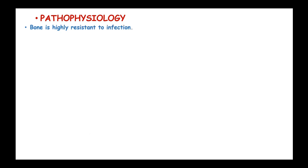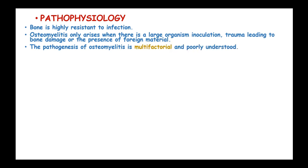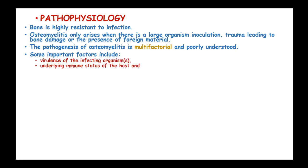Normally bone is highly resistant to infection, and osteomyelitis only arises when there is a large organism inoculation, trauma leading to bone damage, or the presence of foreign materials. The pathogenesis of osteomyelitis is multifactorial and poorly understood. Important factors include the virulence of the infecting organisms, the underlying immune status of the host, genotype, and the location and vasculature of the bone.